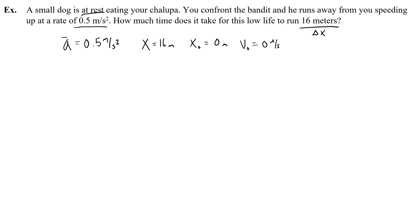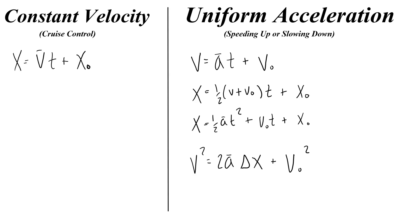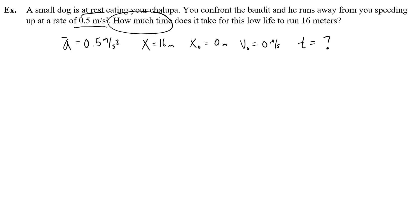Now I move on to the U in GUESS, which is unknown. What's the unknown thing they want me to find? That would be time. So what I'll do is I will write down t equals question mark to remind me that that is the variable I'm looking for. Now that I have all of these variables written down on my paper, I'm going to go to my Pokedex of motion equations and try and find the equation that has all of these things in it. Do you see an equation that has all of these variables in it?